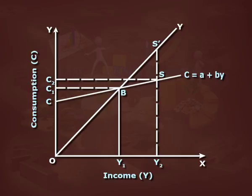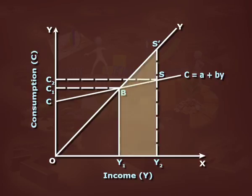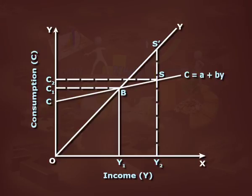It is evident that the consumption function curve CC deviates from line OY. At lower levels of income, CC lies above the OY line, signifying that consumption is greater than income. With increase in income from Y1 to Y2, consumption increases but less proportionately, as Y1Y2 is less than C1C2. As income increases, there is provision for savings too; with increase in income, a part of income is saved, shown as SS'.